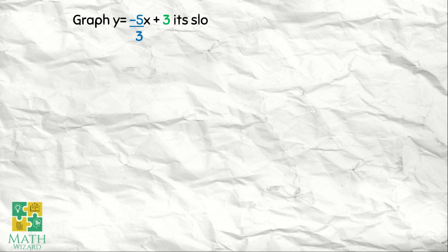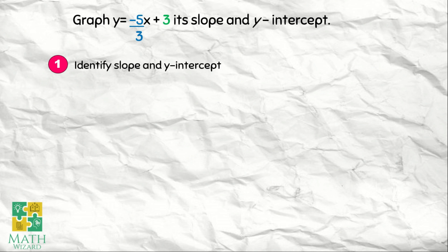Let's have our first example. Graph y is equal to negative 5x over 3 plus 3, its slope and y-intercept. The first one is we need to identify the slope and y-intercept. Isulat muna natin yung given problem natin and we need to identify sino nga ba si slope and y-intercept.